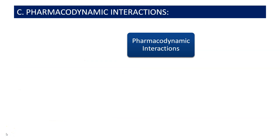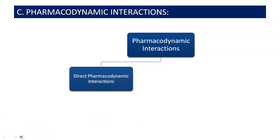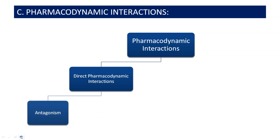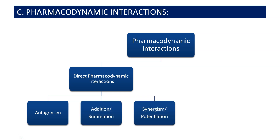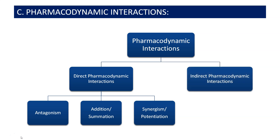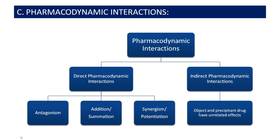This graph explains all the things. On the top, we have pharmacodynamic interactions. Under direct pharmacodynamic interactions, we can see antagonism, addition or summation, and synergism or potentiation. Under indirect pharmacodynamic interactions, the object and precipitant drug have unrelated effects. This is the total chart covering direct and indirect interactions.